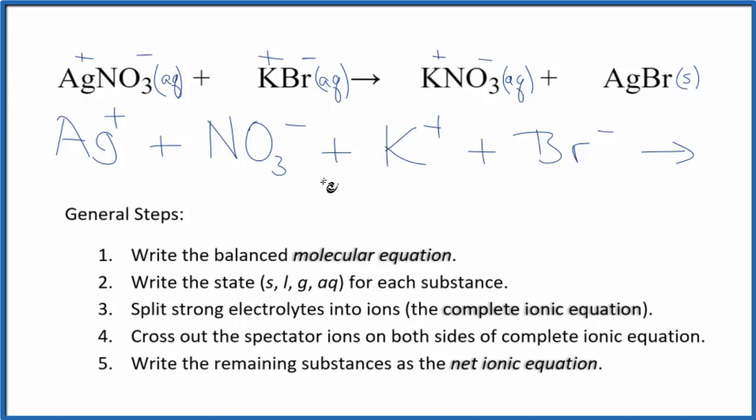We have our potassium ion again, and then our nitrate ion. The AgBr, since that's a solid, we do not split solids apart in net ionic equations. We'll just leave that as AgBr. That's our complete ionic equation.